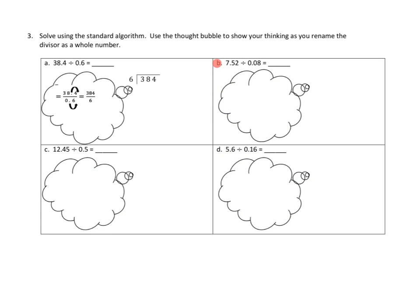Last problem. Problem number three is a different type solved using the standard algorithm. Use the thought bubble to show your thinking as you rename the divisor as a whole number. Okay. So I'm looking at their pattern here. They started with 38.4 divided by 0.6. And I noticed that they kind of moved the decimal one spot to the right. This is the same as multiplying by 10, right? To create a new problem that was a little friendlier, 384 divided by 6.